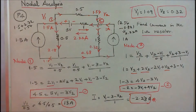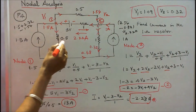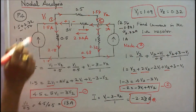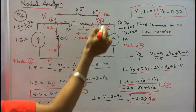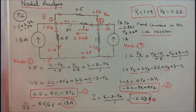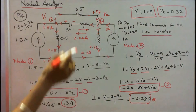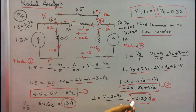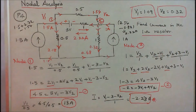Knowing V1 and V2, the current through the 0.5 ohm resistor equals V1 divided by 0.5, which is 2.18 amps. V2 divided by 1 equals 0.32 amps. The current through the 1 ohm resistor is: I equals (V1 minus 3 minus V2) divided by 1, which equals minus 2.23 amps. The negative sign indicates the current is opposite to the original assumed direction. Current flow in the 1 ohm resistor is minus 2.23 amps.